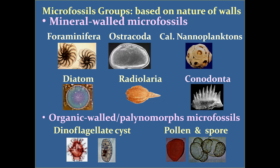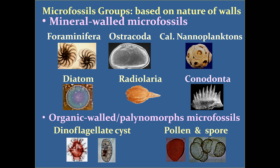Microfossils may be broadly divided into two groups on the basis of nature of wall. One is called mineral-walled microfossil, the other is called organic-walled microfossil or palynomorph. Mineral-walled microfossils include foraminifera, which is the largest and most important group, ostracoda, calcareous nannoplanktons, diatoms, radiolaria, and conodonts. Organic-walled microfossils include dinoflagellate cysts, pollen, and spores.